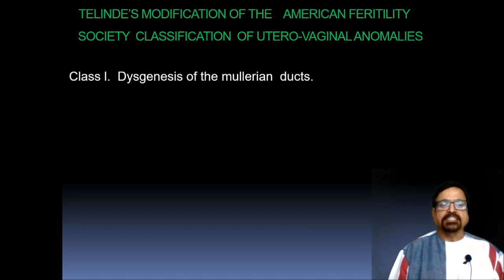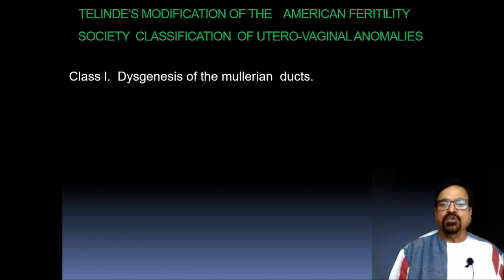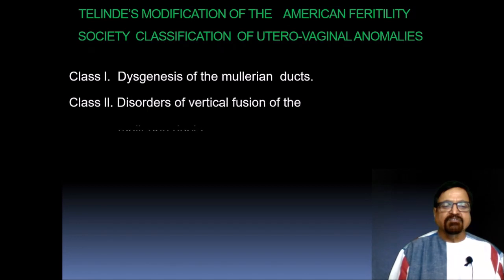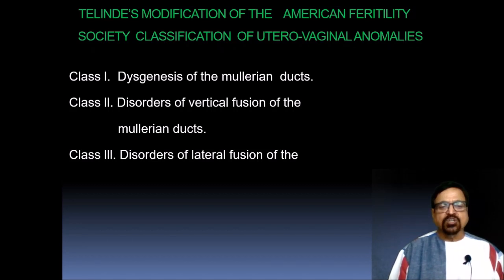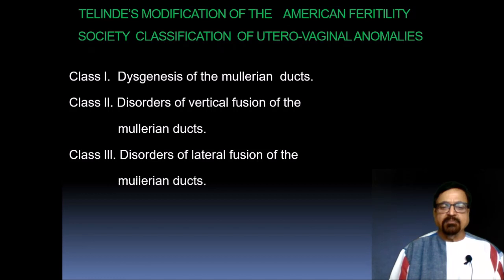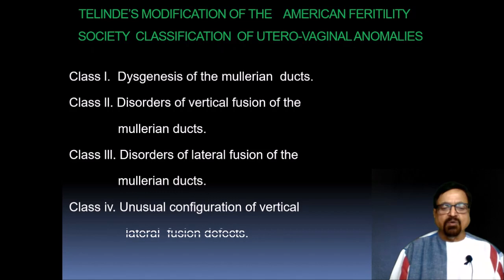There is another type of classification — a modified classification of the American Fertility Society called the classification of utero-vaginal anomalies. In Class 1, there is dysgenesis of the Mullerian duct. In Class 2, there is a disorder of vertical fusion of the Mullerian duct. In Class 3, there are disorders of lateral fusion of the Mullerian duct. In Class 4, there are unusual configurations of vertical or lateral fusion defects.